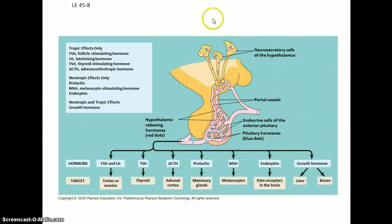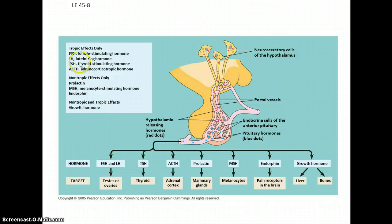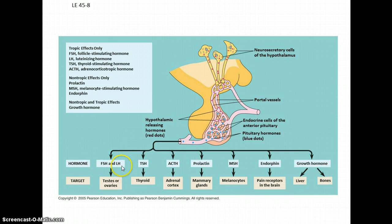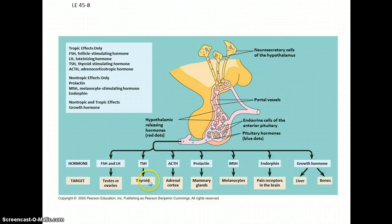You also have neurosecretory cells that act upon the anterior pituitary, with many different functions going on there — including what we call tropic hormones like FSH, LH, TSH, and ACTH. Tropic hormones are hormones that act upon other glands, as opposed to non-tropic hormones which simply travel around and the relevant tissues respond to them. These tropic hormones cause other glands to then often release other kinds of hormones.